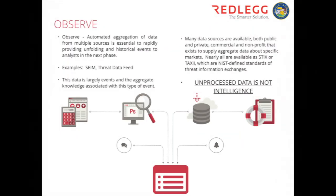The first step is observe — the data coming in, your threat intel feeds, the stuff coming out of your SIEM, basically the raw information saying here's some stuff happening somewhere that may not have anything to do with you. You pass that to the orient phase, where you massage it into something your tools can recognize and correlate. Then you make a decision once you've applied contextual information, and take action based on those decisions.